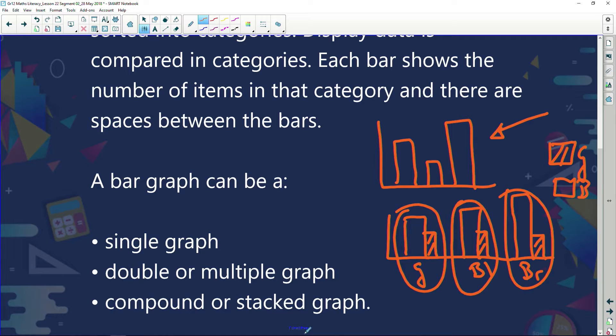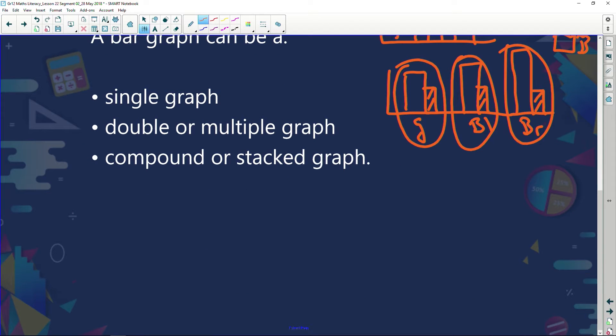Let's get on with a wonderful example. Before that, let's just have a look at what is a compound or a stacked graph. Now, if you look at our double graph, we've got graphs next to each other. A compound or stacked graph, we could have very similar sort of thing. But look what's happening now. We're now stacking them on top of each other. So we're getting this sort of graph. And it would also have a key. We'll get on to that later on.